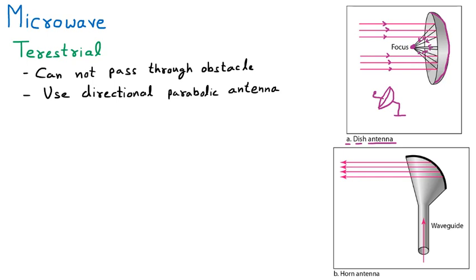The second type of directional antenna is the horn antenna. It also has a parabolic shape. When sending a signal, the waves enter the waveguide from below, are directed by the parabolic shape, and sent to the other person. The horn antenna is not commonly seen on a daily basis, but the dish antenna we have seen many times, even on home rooftops, because it works for TV communication.